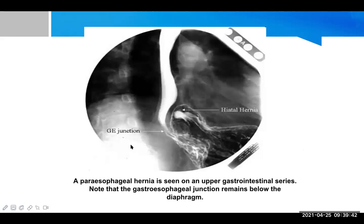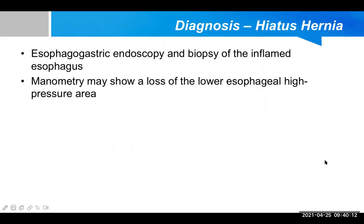Another barium X-ray shows the gastroesophageal junction with a hiatus hernia — this is a paraesophageal type, since the gastroesophageal junction remains in place while the stomach herniates beside it. If it were sliding type, the gastroesophageal junction would be displaced upward. Esophagogastric endoscopy and biopsy of the inflamed esophagus may also be performed, but the more important tests are barium swallow study and fluoroscopy.